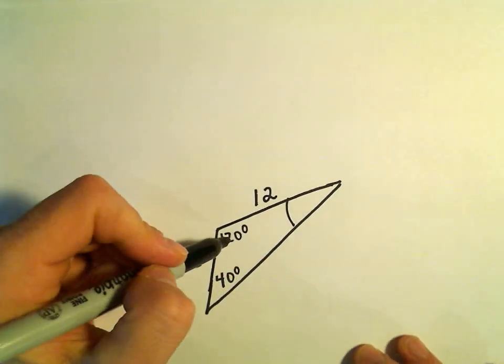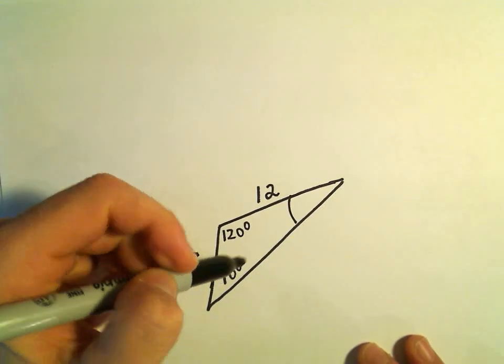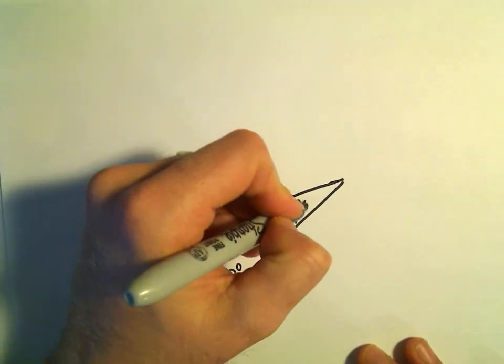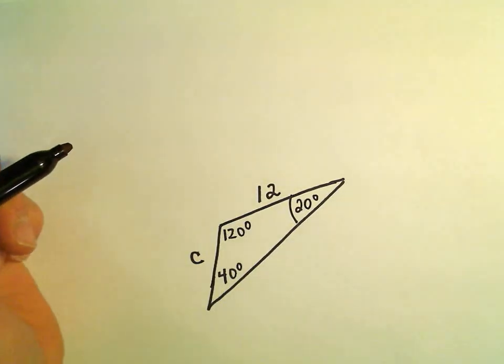We know that the angles inside of a triangle add up to 180. So 120 plus 40 is 160, which means the other angle must be 20 degrees. Those will now all add up to 180.